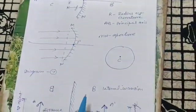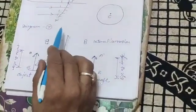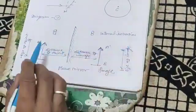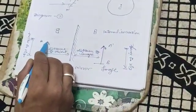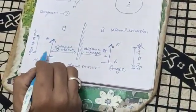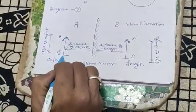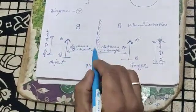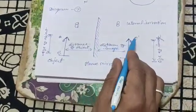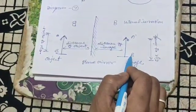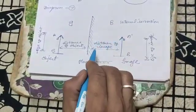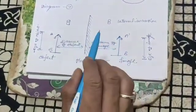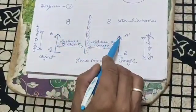Now the next topic is properties of image formed by plane mirror. When an object is placed in front of plane mirror, suppose object AB is placed in front of plane mirror, then the image forms A dash B dash. Now the nature of image will be: plane mirror forms erect and virtual image.